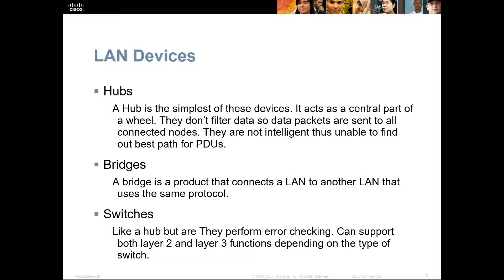A switch is very similar to a hub, but unlike hubs, switches do error checking and can support both layer 2 and layer 3 functionality depending on the switch. It also does better frame forwarding. A hub blankly broadcasts frames out all ports, whereas a switch will only send the message out the appropriate interface unless it is a dedicated broadcast. So a switch is a smart hub, or you could say a hub is a dumb switch.